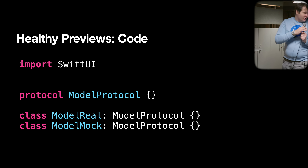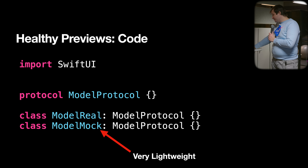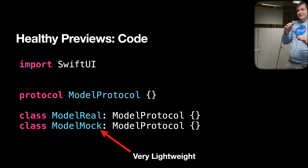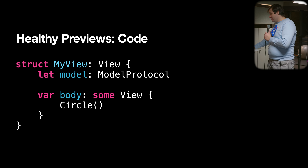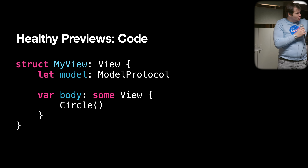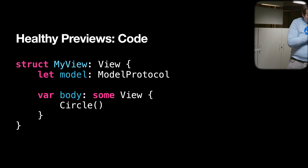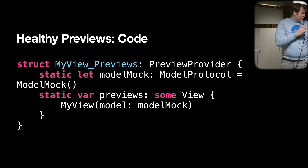Looking at the code: we create one protocol and two classes that implement those protocols so we can swap the model whenever we want. The mock model is very lightweight — just a single Swift class. In the view, you have this model and use it to define properties, for example the opacity of a circle. In the preview, you correspondingly use the model mock, initialize your view with it, and never change it afterwards.